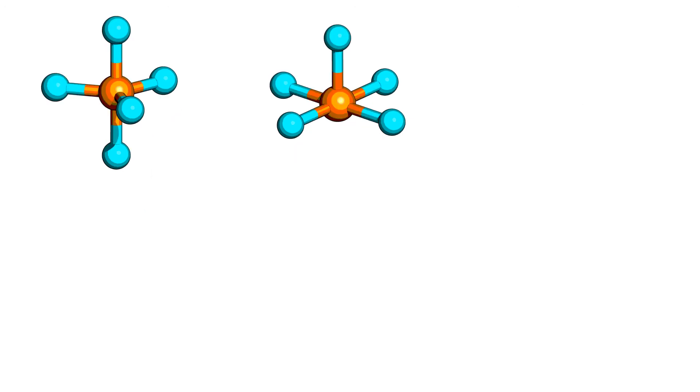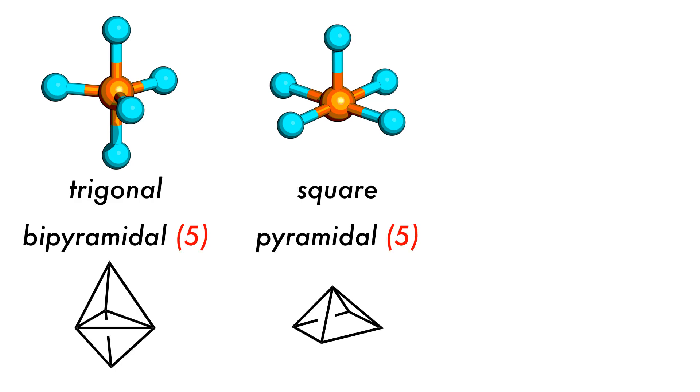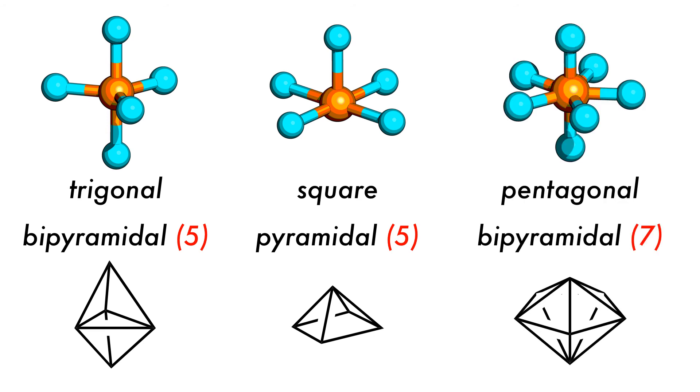We can also find some interesting geometries with coordination numbers of five, trigonal bipyramidal and square pyramidal being prime examples. Geometries are not limited to coordination numbers of six and below, and some fantastically interesting structures can be found with coordination numbers up to 16, including the seven-coordinate pentagonal bipyramidal.